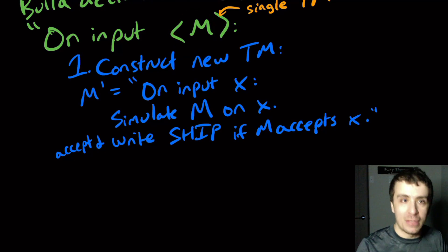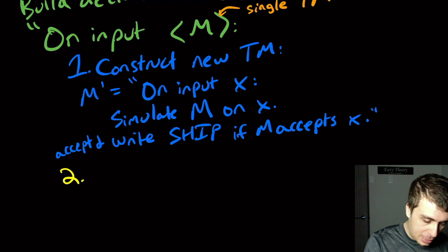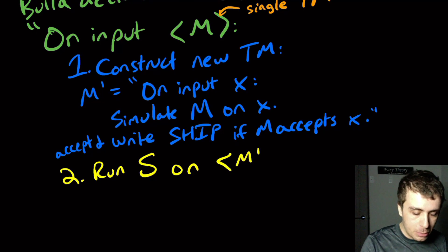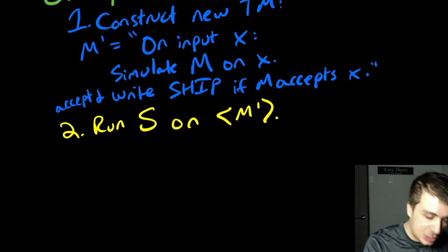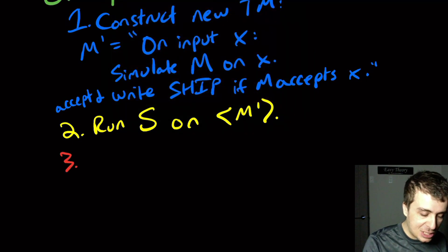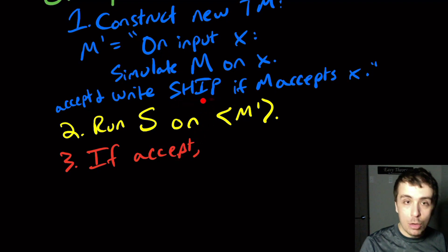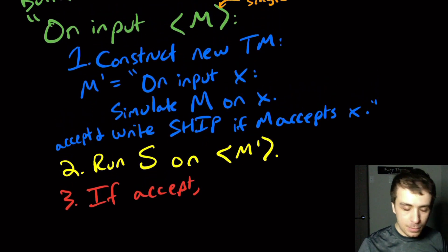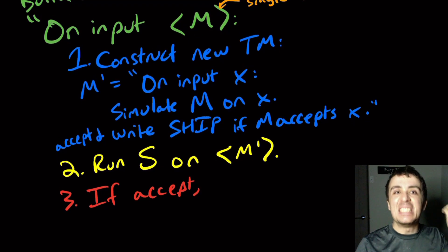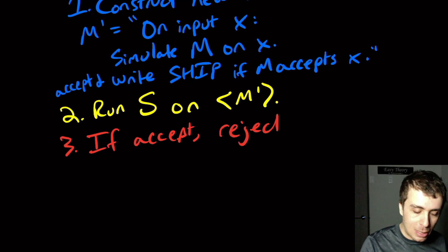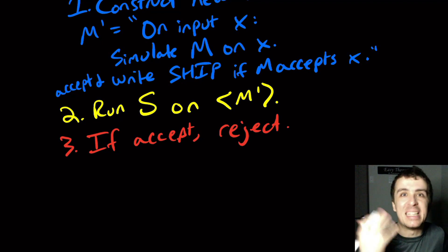So we could now solve the emptiness problem. Let's run the supposed decider S on this new machine that we just made. It's a supposed decider so it must say accept or reject. If it accepts, then that means it wrote the word ship at some point. So that means that the original machine did accept something at some point. So that means that it's not empty. So therefore we need to reject here because we're trying to solve the emptiness problem and we just determined that it did accept something.